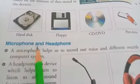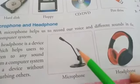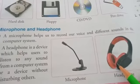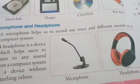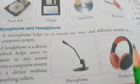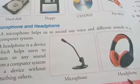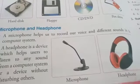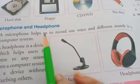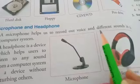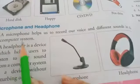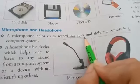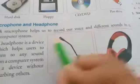Next, microphone and headphone. This is a microphone — from that we can speak. And this is a headphone — from that we can listen to things. A microphone helps us to record our voice and different sounds in the computer system. Through the microphone we can record our voice and different sounds using microphone.